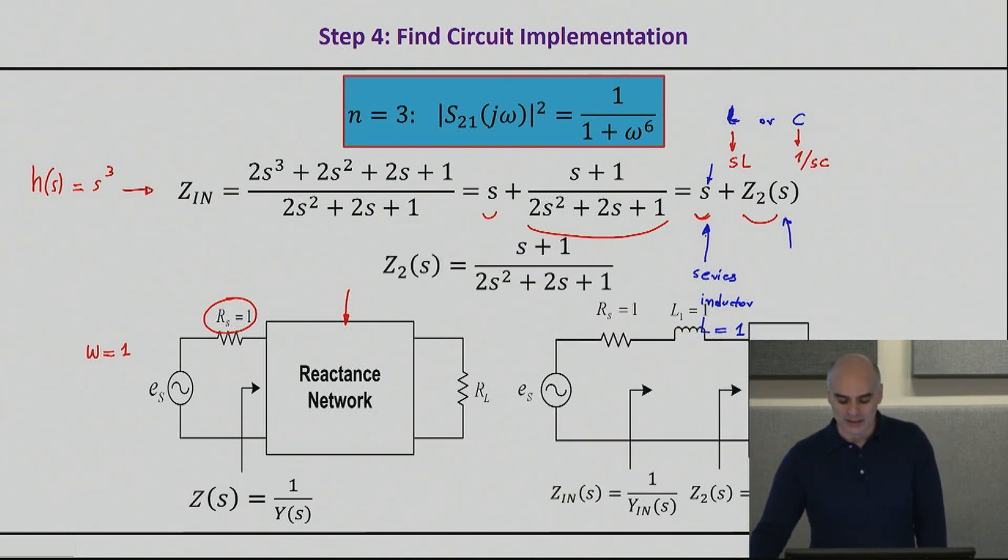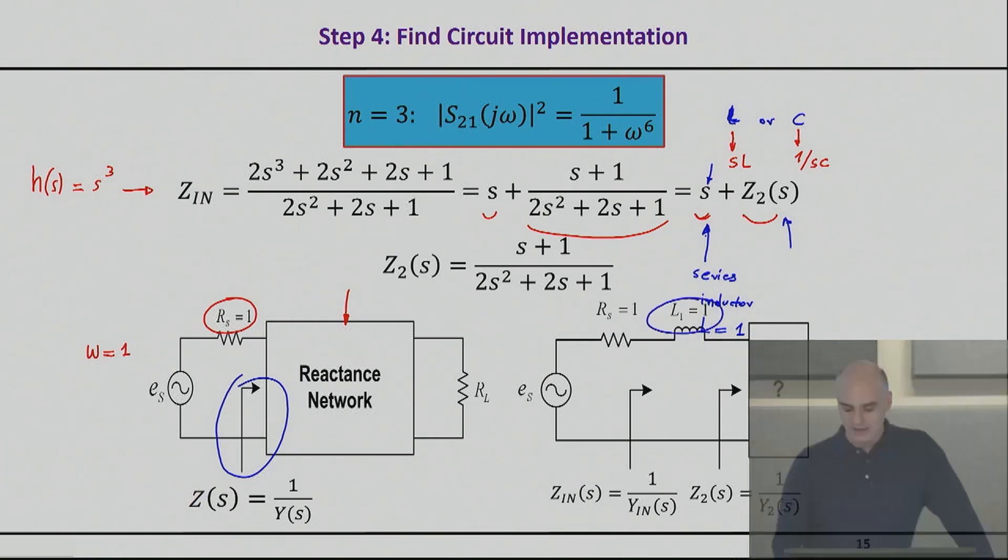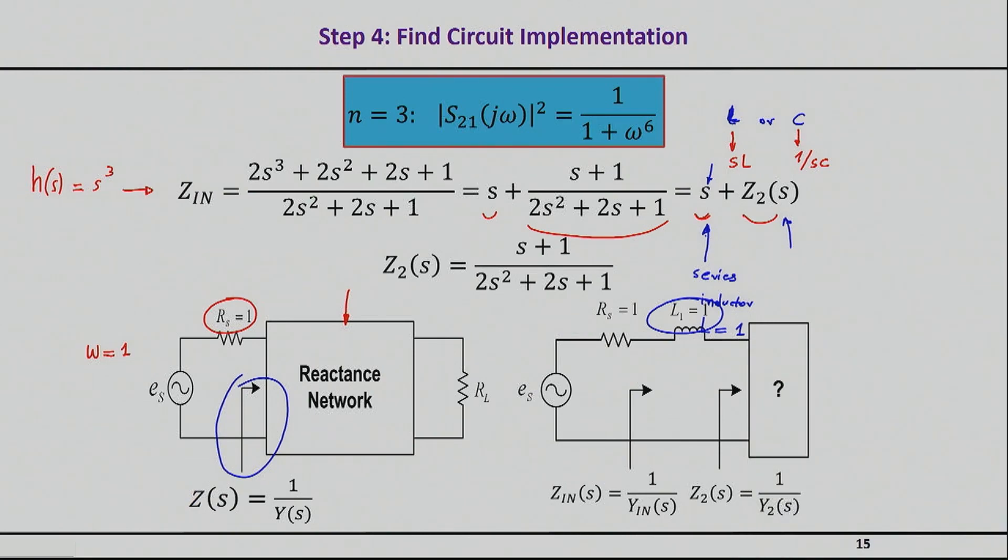So essentially, once I have this hint, then I basically say, look, I'm trying to implement my input impedance to be the way I want it up there. So let me just take out the series inductor with an inductance of 1, shown right here. And then anything I add after this will basically implement Z2, which is this impedance right here.